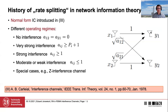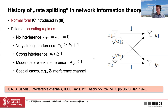For no interference, capacity is known — two parallel channels. For very strong and strong interference, the capacity region is also known. For moderate interference, it is not known, and unfortunately this is the usual case in cellular communication: a user is associated with the nearest base station, so the direct link is stronger than interfering links, meaning interfering channel coefficients are smaller than one.